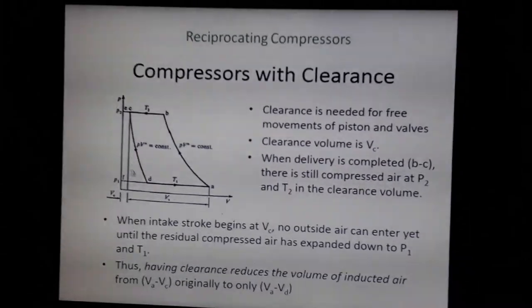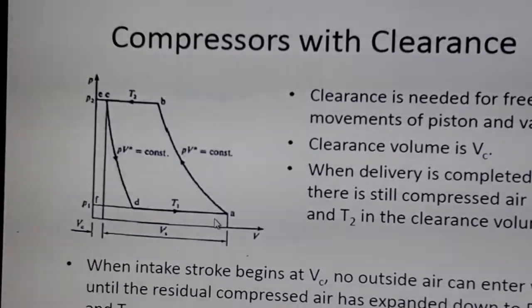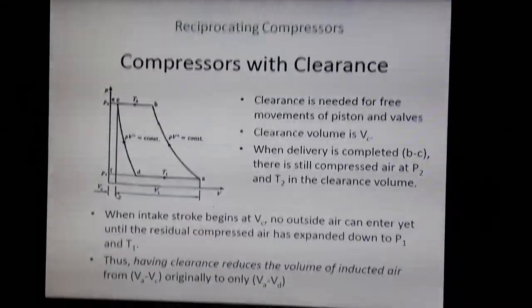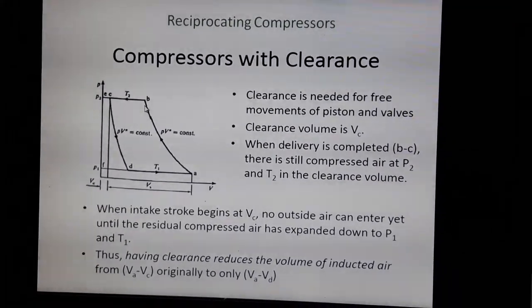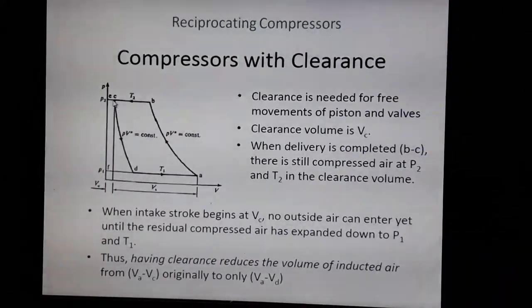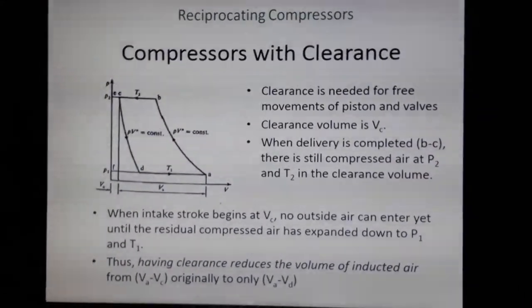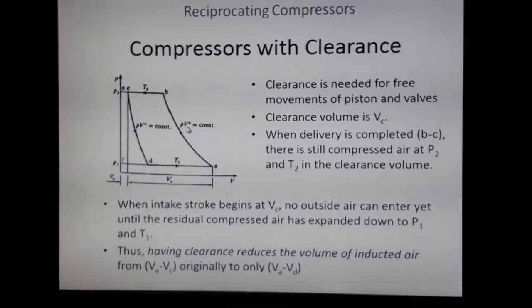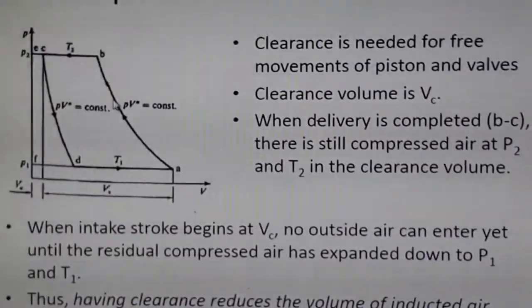On the PV diagram, the cycle is a-b-c-d. The clearance volume is indicated by V_c, the swept volume is V_s, and the total volume is V_a, so V_a equals V_c plus V_s. Process a-to-b is compression, b-to-c is discharge, c-to-d is expansion, and d-to-a is intake. The expansion and compression represented here are polytropic. Depending on the application, compression may be isothermal, polytropic, or adiabatic.